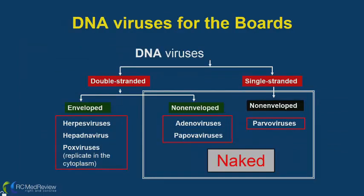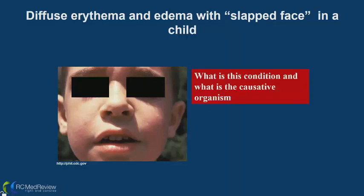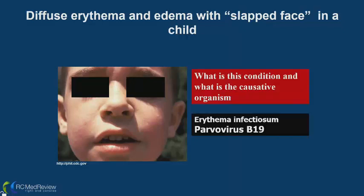The last group is parvoviruses. A key scenario: diffuse erythema and edema with a slapped-face appearance in a child — this is erythema infectiosum caused by parvovirus B19. This is straightforward and frequently tested.